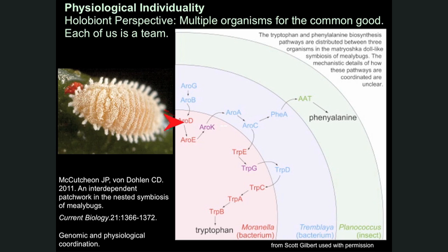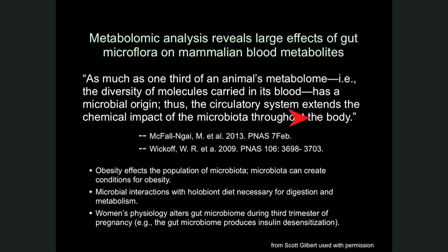It starts off in the symbiont, goes into the symbiont of the symbiont, back to the symbiont, and then finally into the mealybug to be turned into phenylalanine. So as much as one-third of an animal's metabolome — the diversity of molecules carried in its blood — has a microbial origin. Thus, the circulatory system extends the chemical impact of the microbiota throughout the body.